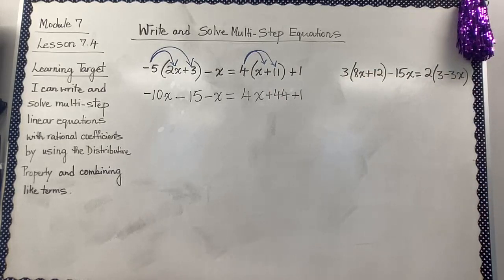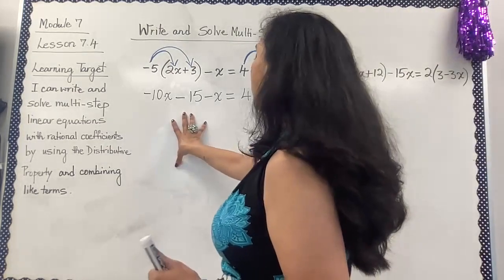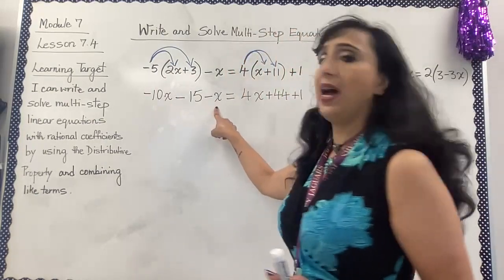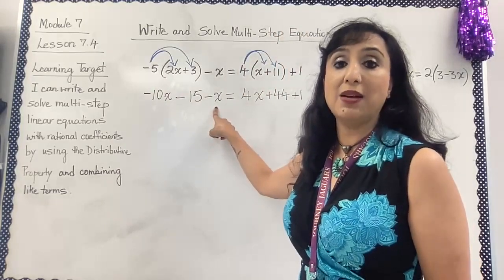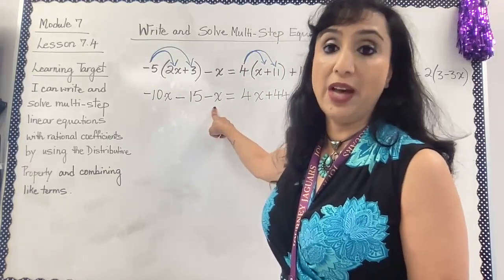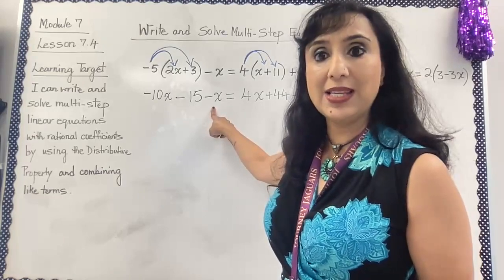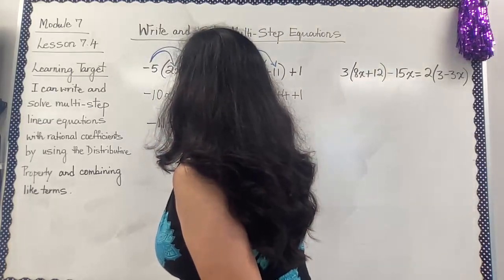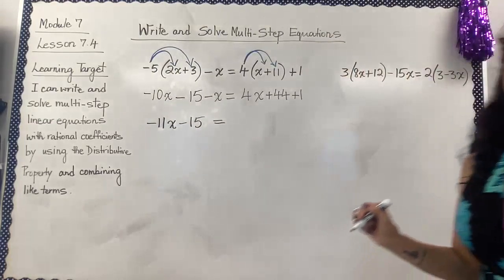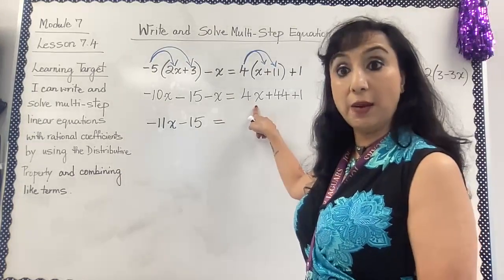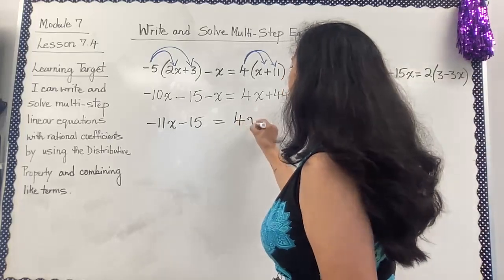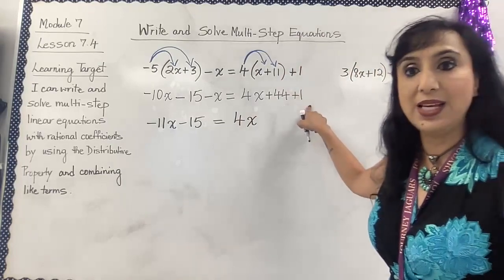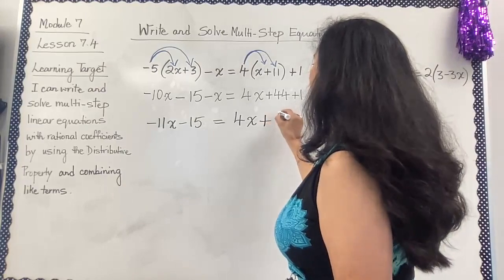This is the first part where we expanded the expression using the distributive property. Next, I'm going to combine the like terms. I have negative 10x and another negative x. Whenever there is no coefficient written, that means there is one of that variable. So negative 10x plus negative x gives me negative 11x. On the other side, 44 plus 1 are like terms, giving 45.